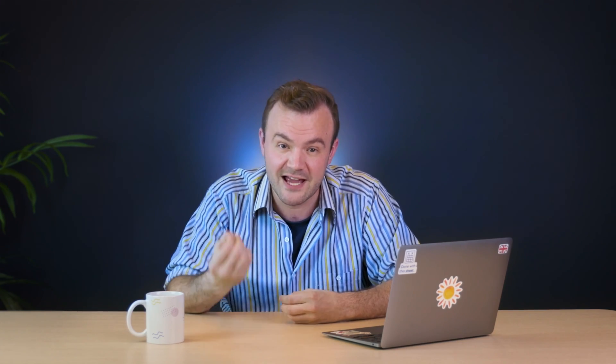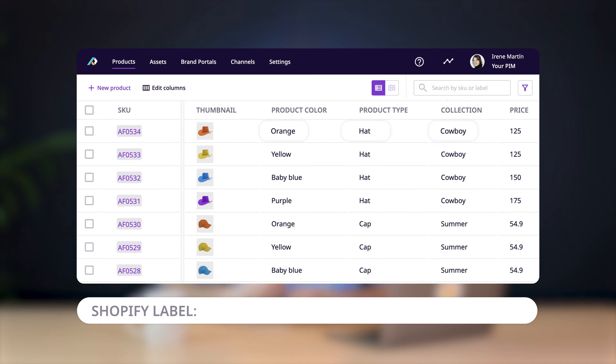On top of that, in some cases PIM software can also automatically generate some of that SEO content for you by taking different data points from your system and combining them in different ways to create unique attributes for every channel and every occasion.